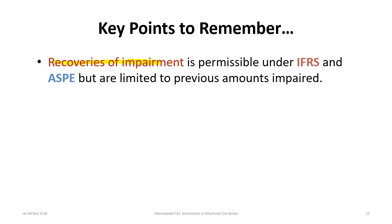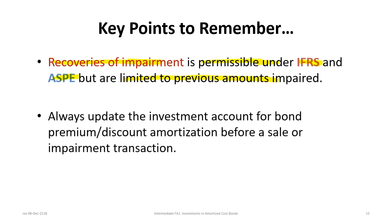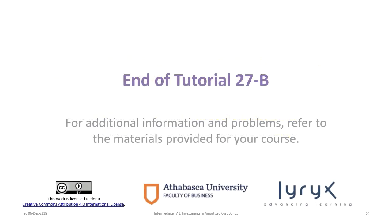Recoveries of impairment are permissible under IFRS and ASPE but limited to any previously impaired amounts. Before making a sale, always update the investment account for bond premium or discount amortization prior to a sale or impairment transaction. For a partial sale, only update for the portion of the bonds being sold. For an impairment, update the prorated amortization for all bonds. That ends Tutorial 27b — we hope you found this tutorial helpful.